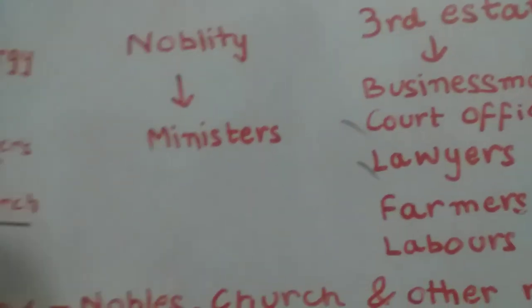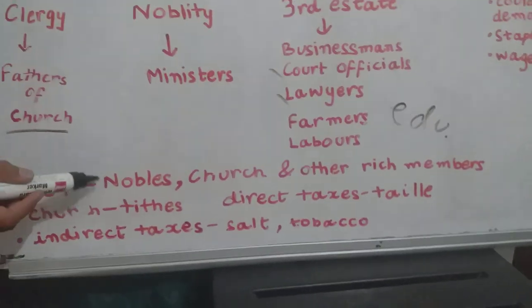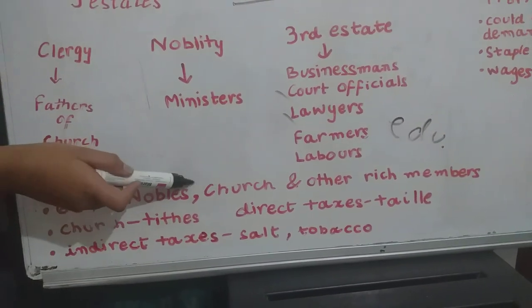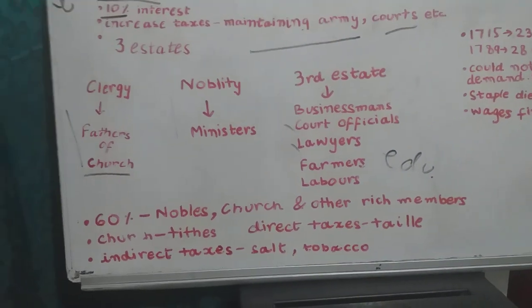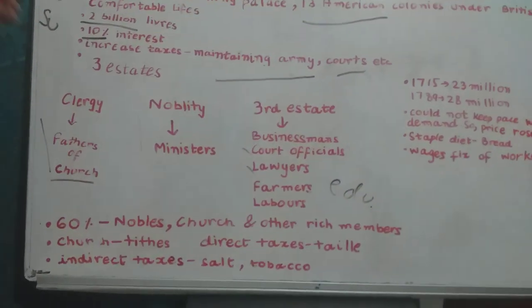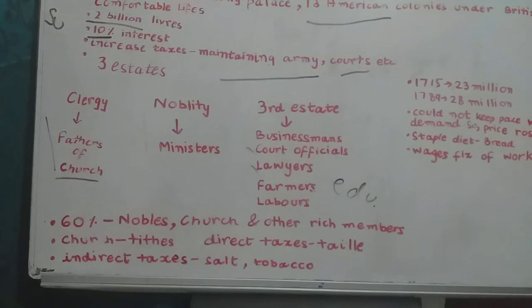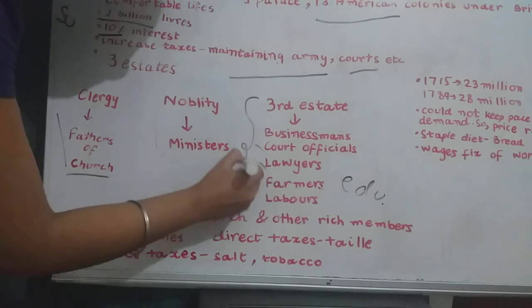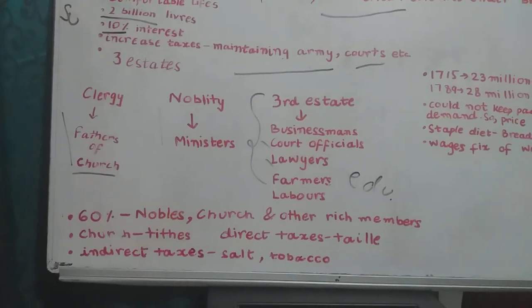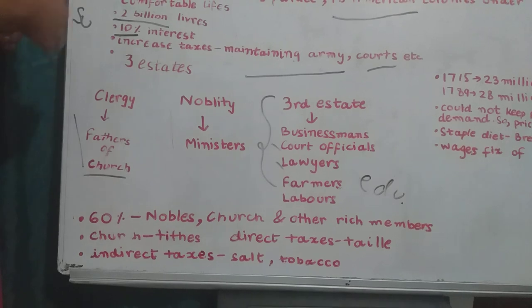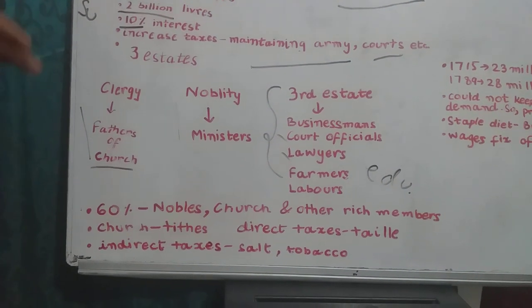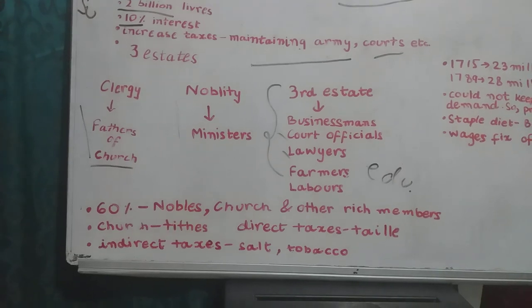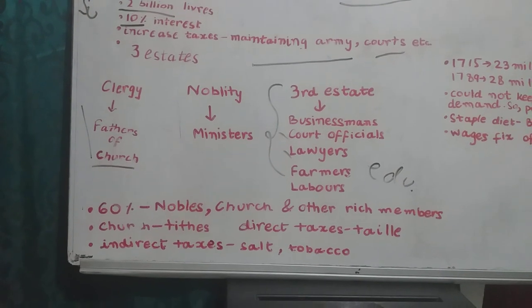About 60% of the land was owned by the nobles, the church, and other rich members. Crucially, the clergy and the nobility were not required to pay taxes. It was only the Third Estate that had to pay taxes — there was no tax obligation on the First or Second Estate.